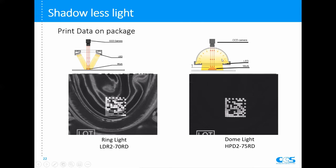This is a very typical shadowless light — it's a dome light called HPD. The LEDs are mounted on the bottom facing up, and there is a dome shell on top that is a reflective shell. The light goes up from the LED, hits the dome, and reflects back down. Because it is a dome shape, we have light coming from all different angles to create a shadowless illumination.